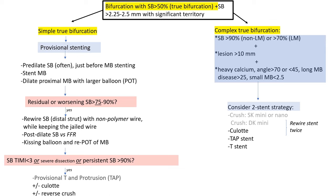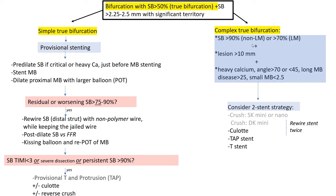You only go for an upfront two-stent strategy in complex true bifurcation where not only the main and side branch are involved, but the involvement is very complex — meaning the circumflex is more than 70% stenosed, the disease is long more than 10 mm, not just the ostium, and you have heavy calcium or heavy plaque burden in the main branch. The risk of side branch occlusion after main vessel stenting is up to 20% in this setting.